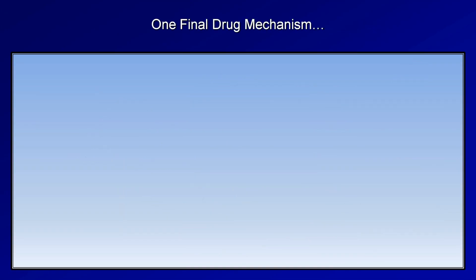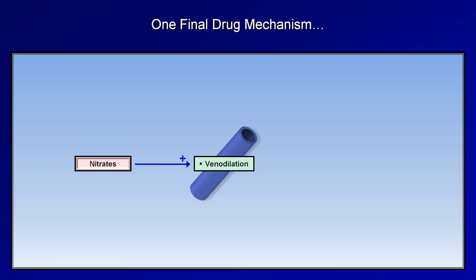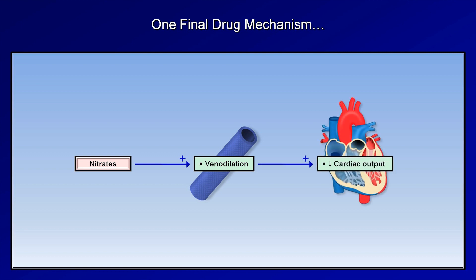There is one final class of medications which does not clearly map to either of those two diagrams. That class is nitrates — for example, isosorbide mononitrate and isosorbide dinitrate. These drugs work primarily by inducing venodilation, which reduces blood return to the heart, resulting in a reduction in cardiac output in patients with normal or near-normal intracardiac blood volume. Nitrates also lead to arterial and arteriolar dilation, though this effect is usually less pronounced.